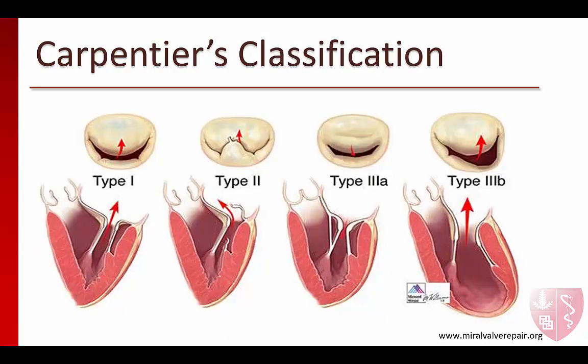Dr. Alain Carpentier is a French cardiothoracic surgeon who is often regarded as the father of modern mitral valve surgery. His classification system is the most widely used to describe mitral valve pathology. In type 1 disease, leaflet motion is normal, but problems like leaflet perforation and annular dilation cause regurgitation, typically resulting in a central regurgitant jet. Type 2 disease is characterized by excessive leaflet motion and includes flail, prolapse, and billowing leaflet pathology. In type 2 lesions, the regurgitant jet is typically directed away from the disease leaflet. Type 2 lesions are frequently associated with Barlow's disease and fibroelastic deficiency, but can happen in other settings such as with ischemic papillary muscle rupture.